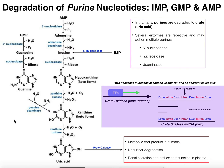In this video we're going to discuss, at least in humans, the degradation of purine nucleotides. By purines we mean IMP, GMP, and AMP. We sometimes may not consider IMP, but there's actually going to be quite a bit of that in the cell at any given time — not as much as GMP and AMP, but we are still going to have some IMP.